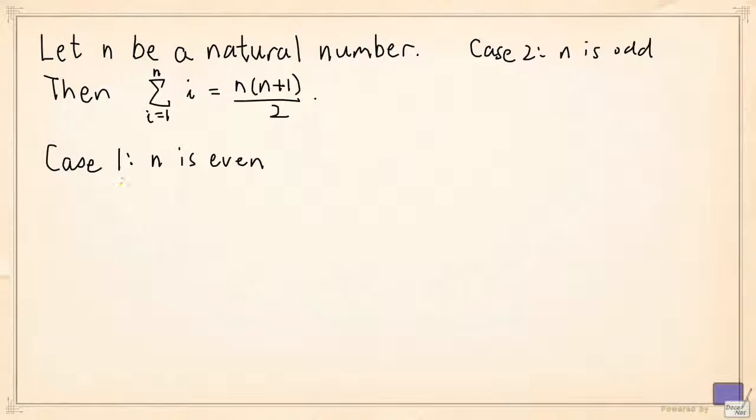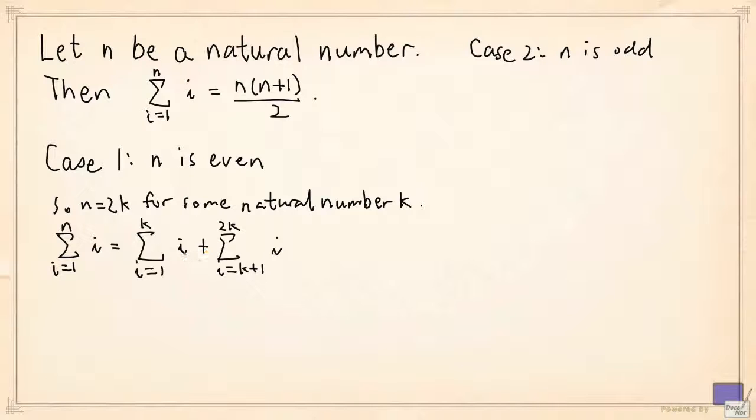So when n is even, there's a natural number k such that n is equal to 2k. And so we can write this sum as follows. More informally, the first summation adds the numbers 1 up to k and the second summation adds the numbers k plus 1 up to 2k. So each summation is going to have k terms.